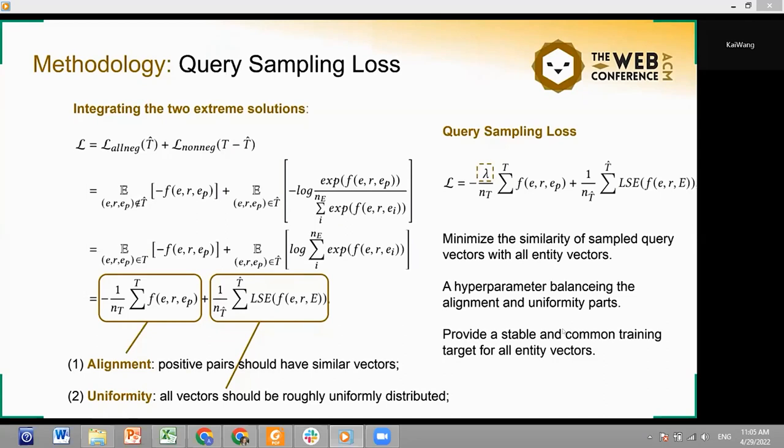Furthermore, it can provide a common training target for all entity vectors to keep their gradients stable in the training process. Therefore, we propose a query sampling loss based on the above loss function. Its computational costs can be significantly declined by reducing the sampling proportion of queries.